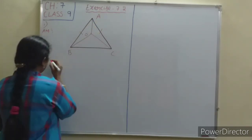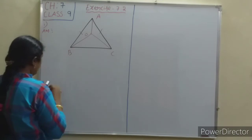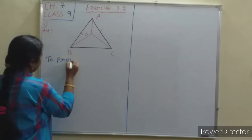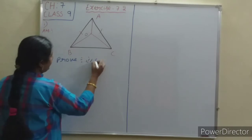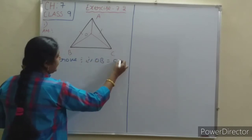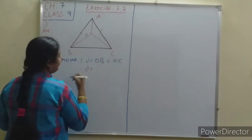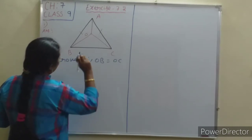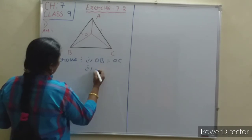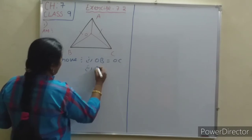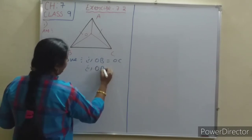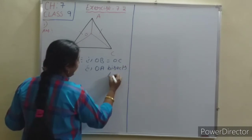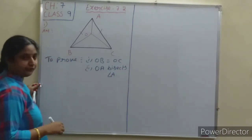Now we have to prove two things: first, we have to prove OB equals OC; and second, we have to prove OA bisects angle A.